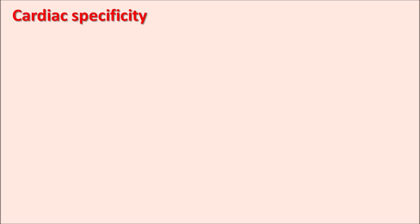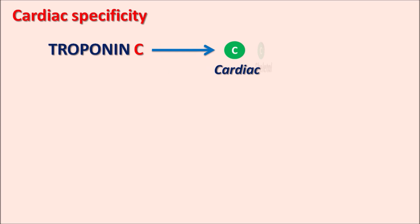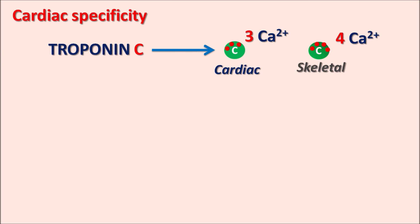What is the cardiac specificity of these troponin molecules? Troponin is present both in cardiac and skeletal muscle and is available in three forms. Troponin C is present in both cardiac and skeletal muscle, and we cannot find any significant difference between cardiac and skeletal troponin C. Both are similar except that cardiac troponin C binds to three calcium molecules whereas skeletal troponin C binds to four calcium molecules. So troponin C is not a good biomarker for cardiac specificity.